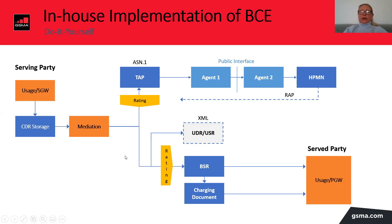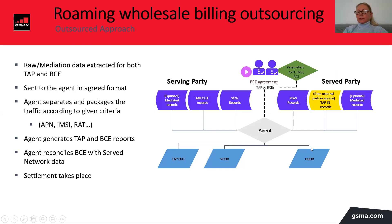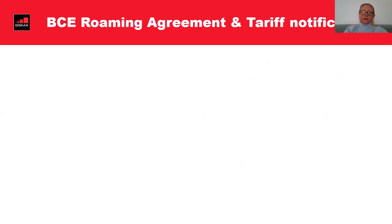If everything is fine, then you create the charging document. Of course, there is also the outsourced approach where as a serving party you just need to figure out which of the three options you use. If you have TAP creation with your agent, you just need to send all mediated records to them and explain what goes to TAP and what goes into BCE based on the criteria mentioned. If you create your own TAP, you go about it as usual — no changes — and send it to your agent. In a parallel flow, just after mediation, you send SGW records which your agent then converts into BCE reports and reconciles with the HPMN reports. Then if everything goes fine, the settlement will take place, and there is minimal involvement from your side.